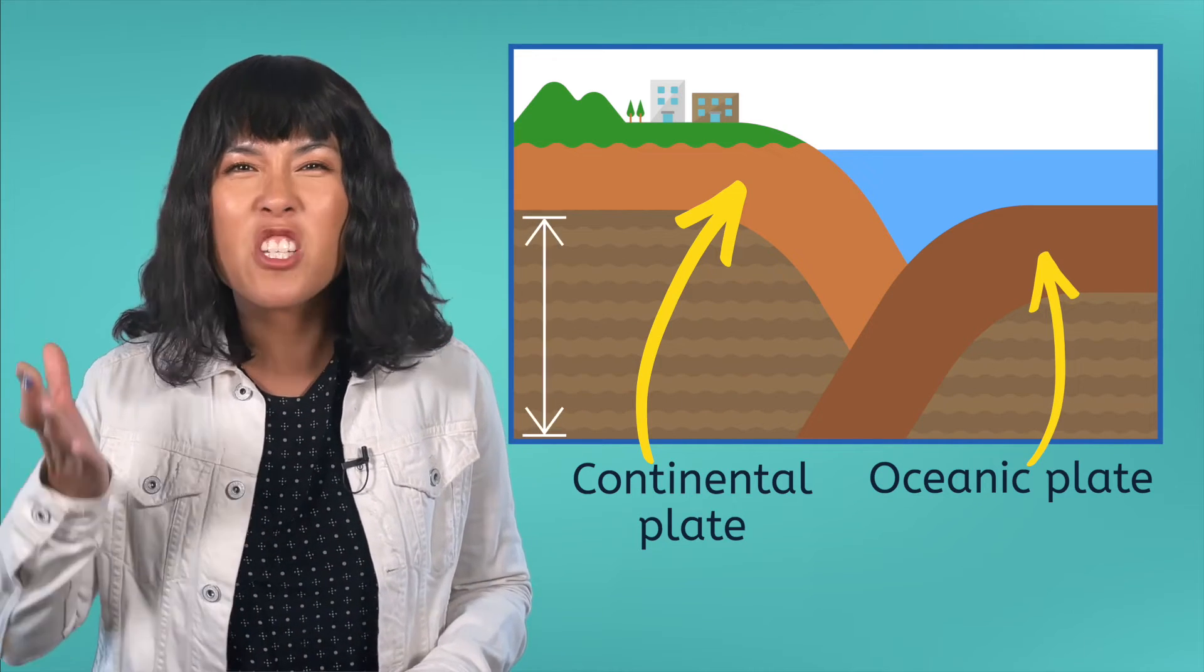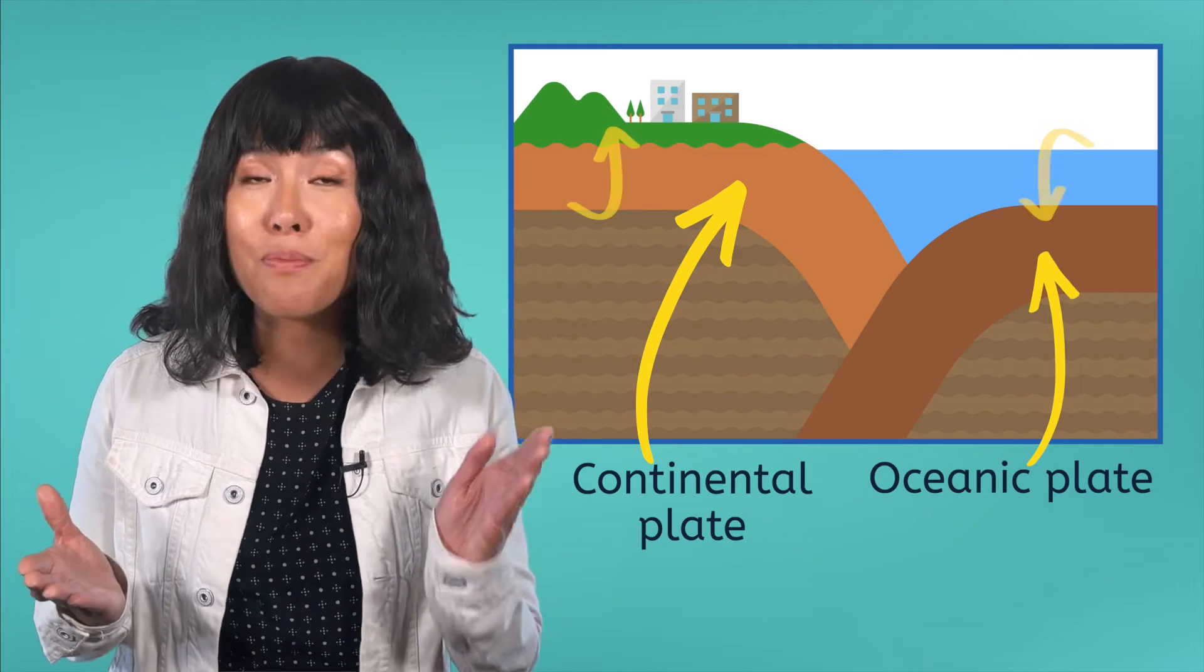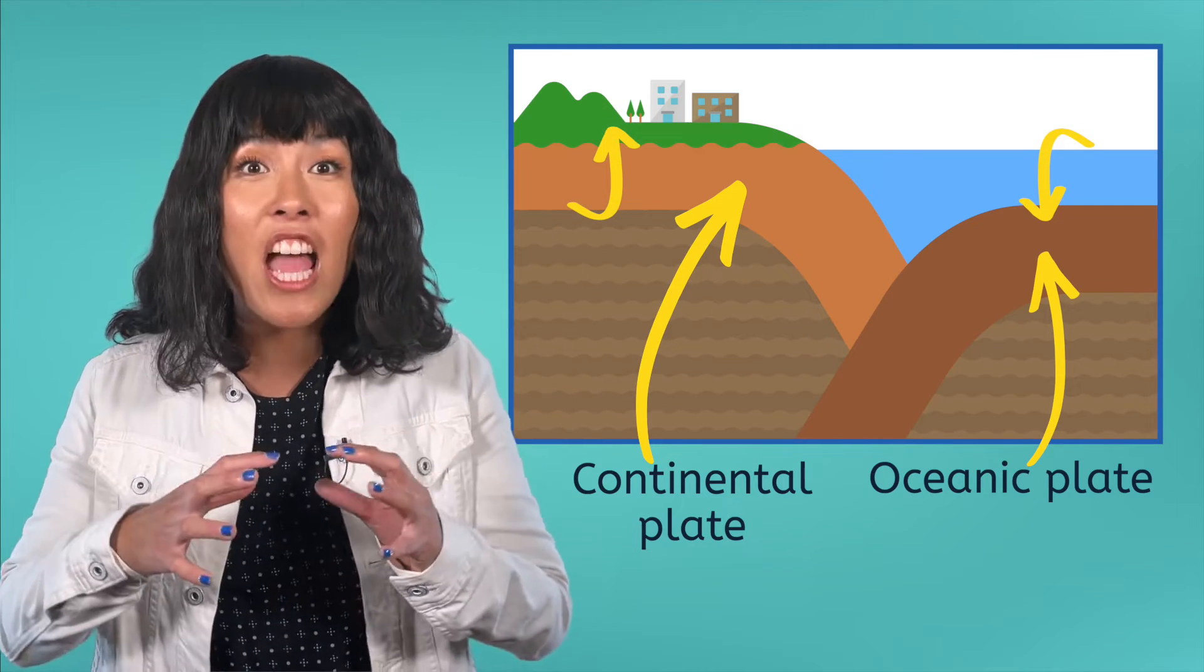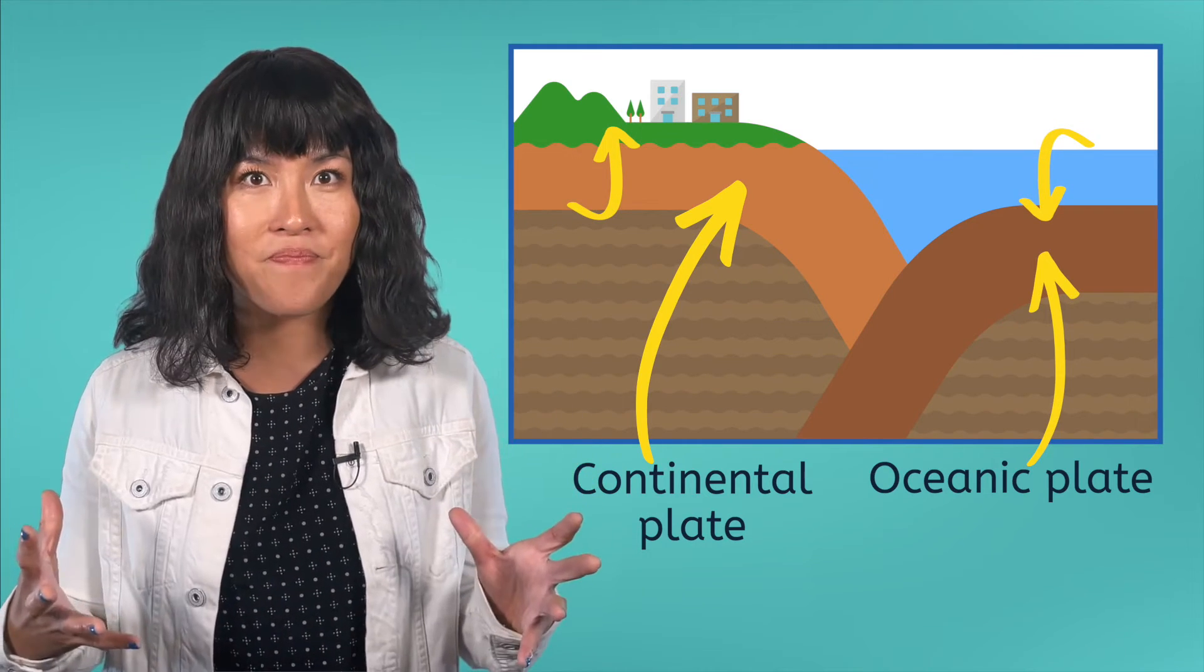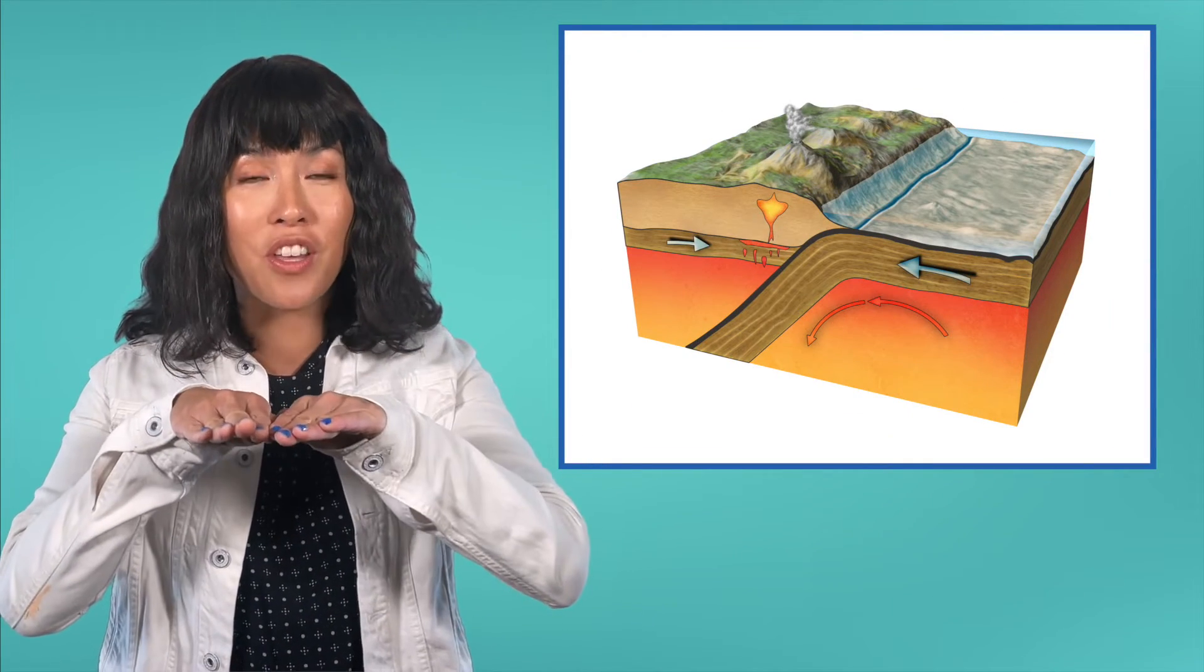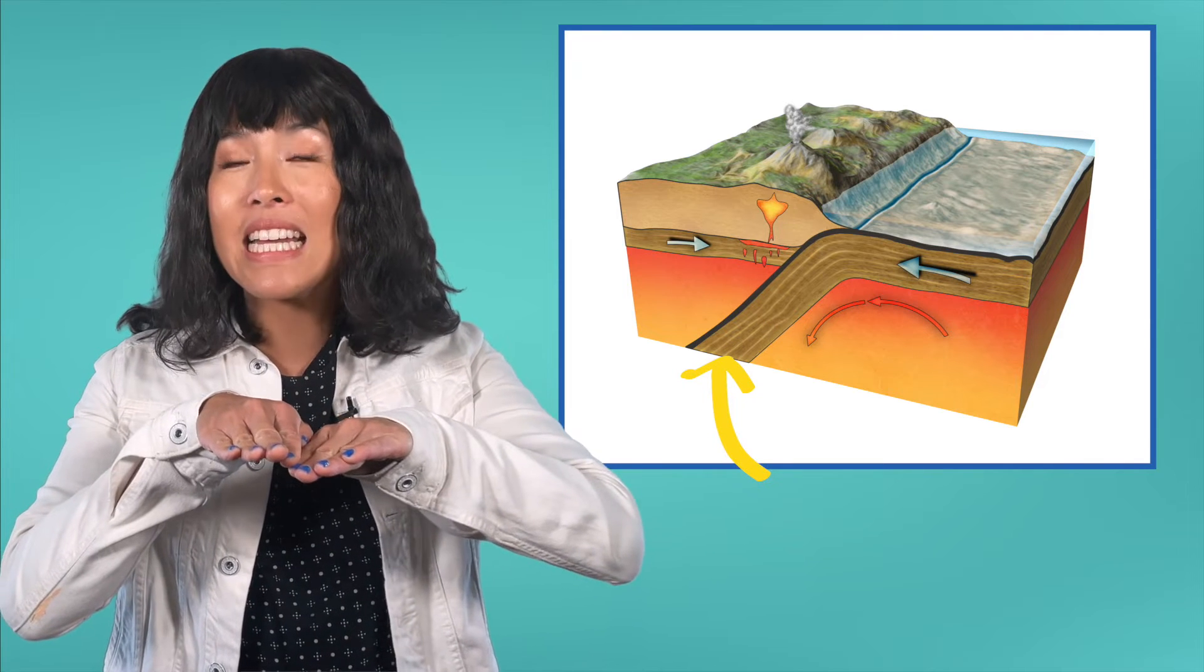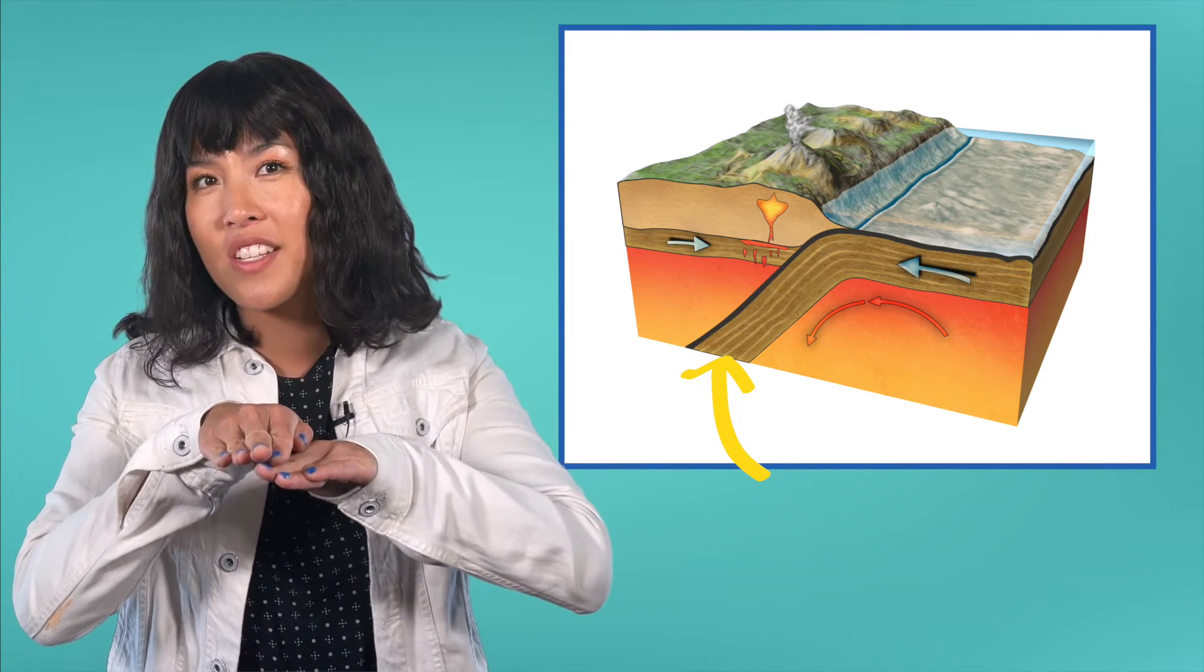Continental plates are much thicker than oceanic plates, but oceanic plates are made out of denser, heavier rocks. When a continental plate and an oceanic plate crash into each other at a convergent boundary, the denser oceanic plate slips underneath the continental plate.